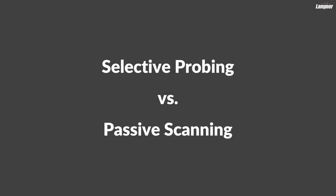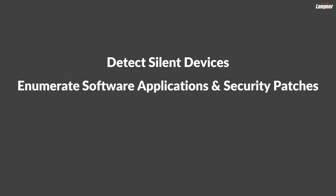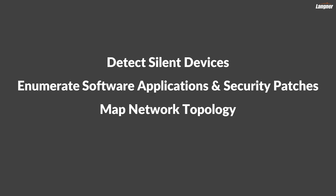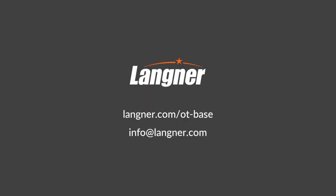If you are looking for an OT asset discovery solution, consider selective probing as an alternative to passive scanning. Selective probing comes with the following benefits: it detects silent devices, reliably enumerates firmware versions, software applications and security patches, accurately maps network topology including layer 1 and layer 2 characteristics, and doesn't require costly hardware appliances. In the next part of this video series, we'll explore the OT-based asset discovery engine in detail.